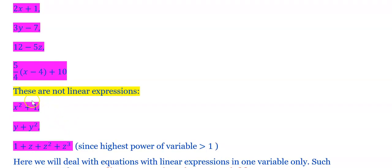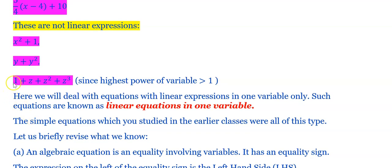Now, the following are NOT linear expressions. x squared plus 1 is not a linear expression because the highest power of x is 2. y plus y squared is also not a linear expression — though it has a single variable, the highest power is not 1. And 1 plus z plus z squared plus z cubed is not a linear expression, since the highest power of the variable is greater than 2.